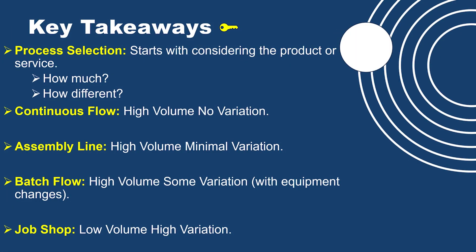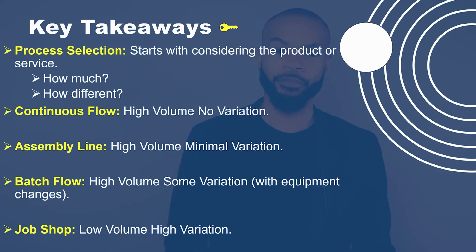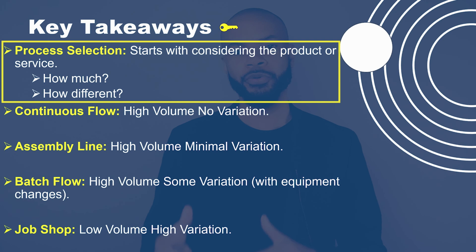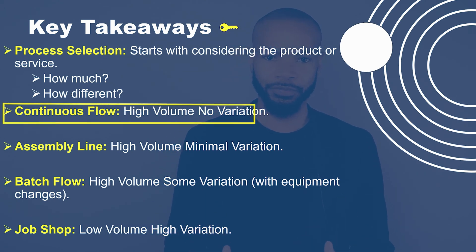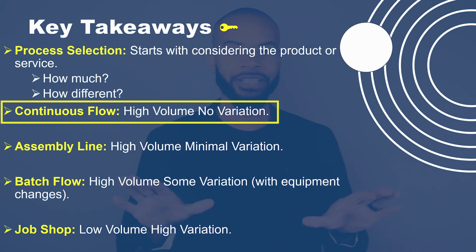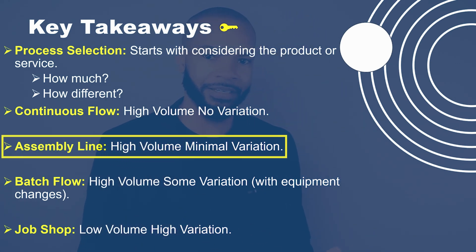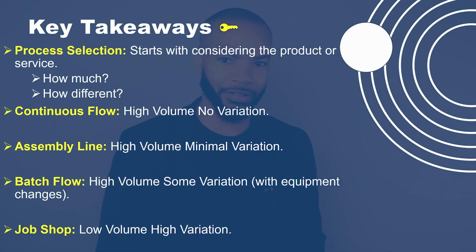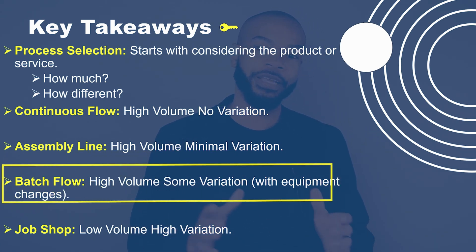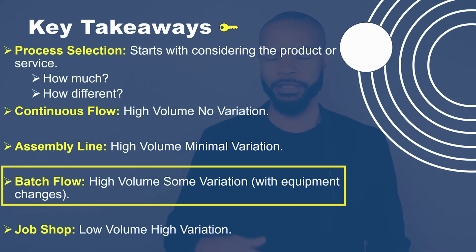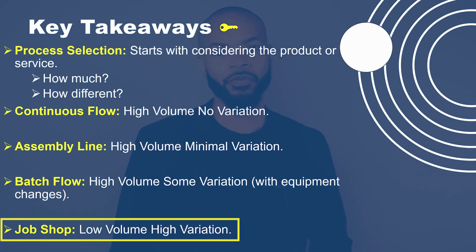Key takeaways: when producing your product, think about two things — how much you're producing and the degree of variation. If you're producing in high volume with no variation, go with continuous flow. If high volume with little variation, assembly line may be best. If moderate to high volume with more variation and equipment changeovers, produce in batches. And if you have customized products with very high variation and low volume, choose a job shop process selection.